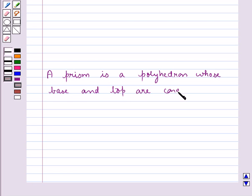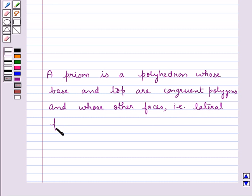First let's see what a prism is. A prism is a polyhedron whose base and top are congruent polygons and whose other faces, that is lateral faces, are parallelograms in shape.